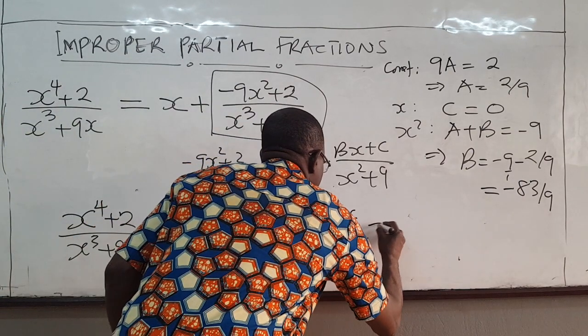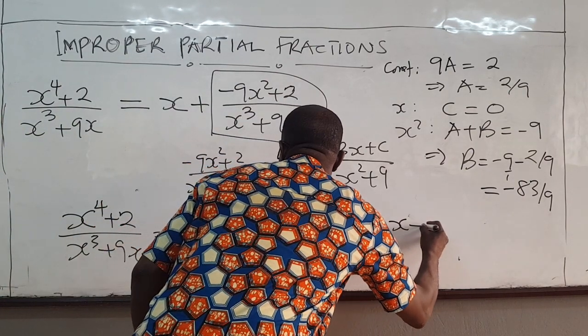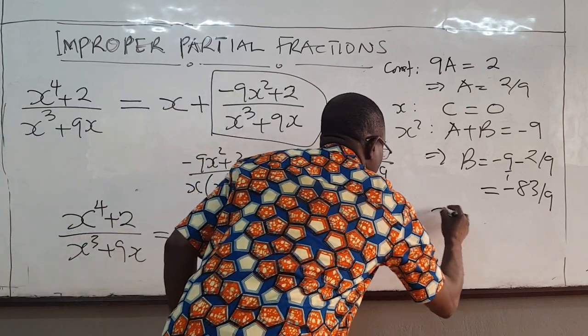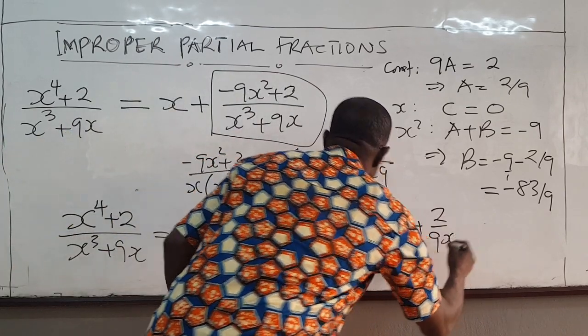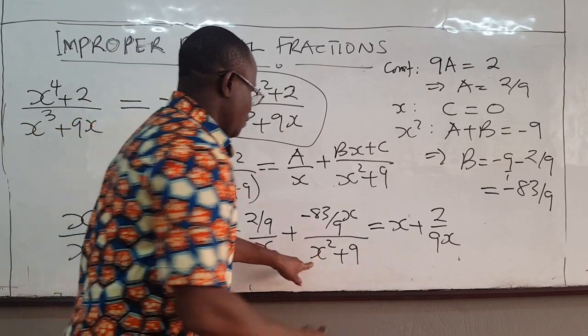You can rewrite this in a different form if you like. This is x plus. This I can write as 2 over 9x. Put the 9 down. Can put the 9 down here as well.